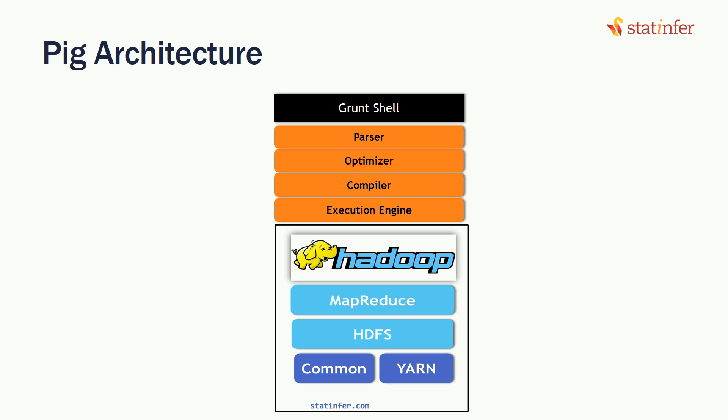The execution engine sends the converted MapReduce code to Hadoop and HDFS. Data resides on HDFS; the analysis or computations are executed there, then the results are fetched back and given as output in Pig. Overall, Pig has a simple architecture — parser, optimizer, compiler, and execution engine — all sitting on top of Hadoop.